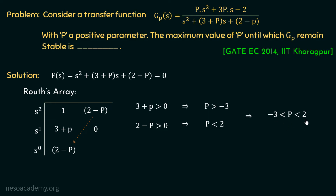However, we are given in this problem that P is a positive parameter, so we can neglect the negative values of P. Therefore, the modified range of P is from 0 to 2, and the system will be stable when P is in the range 0 to 2.